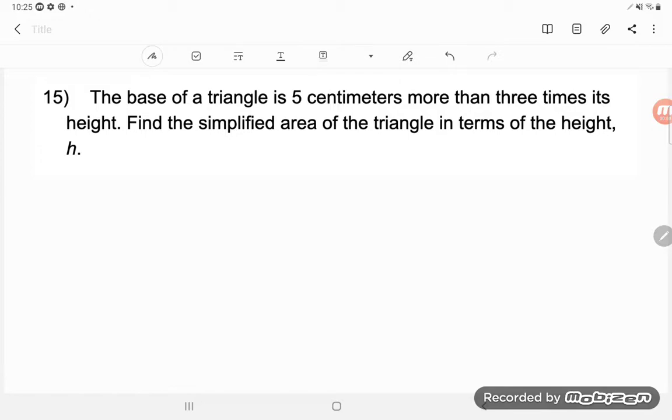So the base of a triangle is 5 centimeters more than 3 times its height. That already sounds confusing, huh? And then it says, find the simplified area of the triangle in terms of the height, H. No wonder this is confusing. I don't even know the height, we're just calling it H. So I think I'd like to start right here with just drawing myself a triangle.